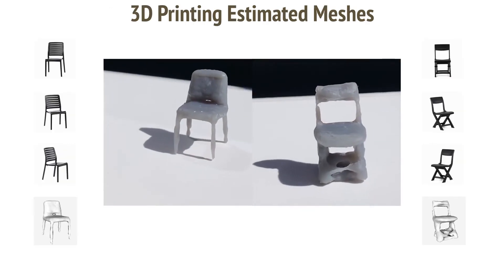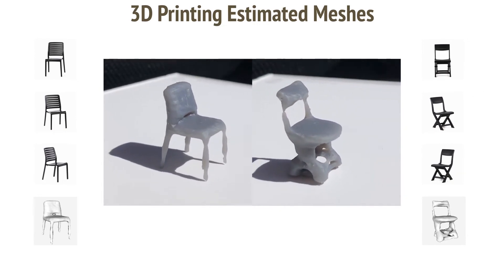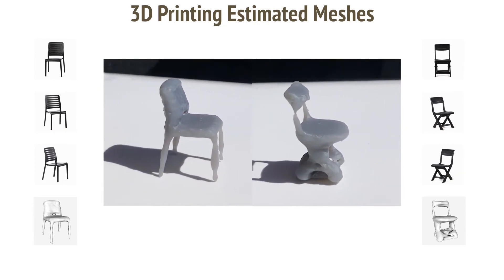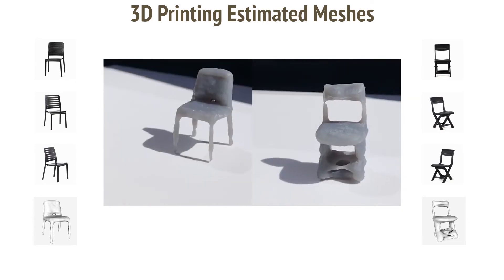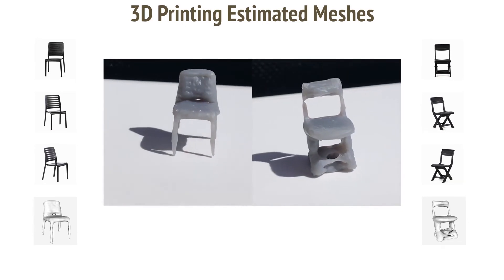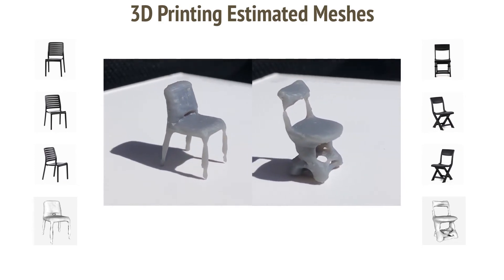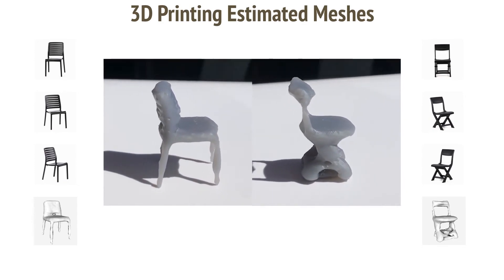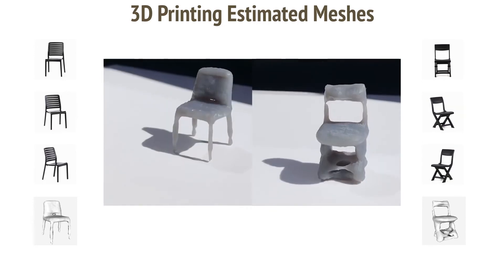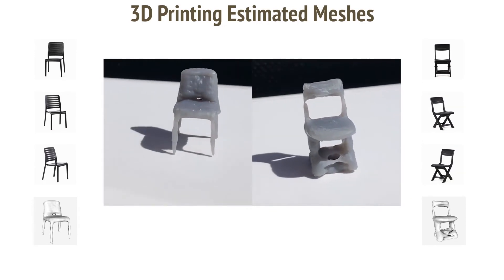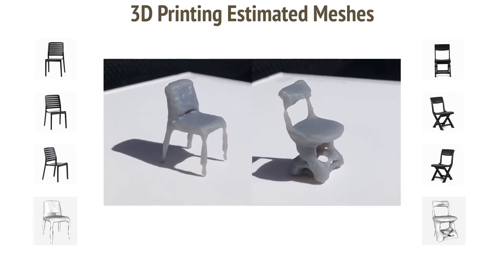Here we demonstrate the utility of our approach to 3D reconstruction. We extract meshes from the occupancy volumes computed from photographs of real chairs found online. Using the input images, we compute the meshes below. Despite the challenging and complex structures of the chairs in these photographs, the resulting meshes are sufficient to 3D print plausible physical reconstructions of these chairs.